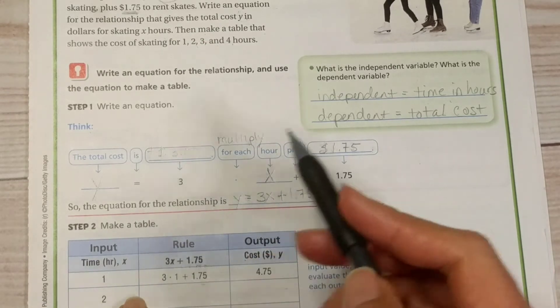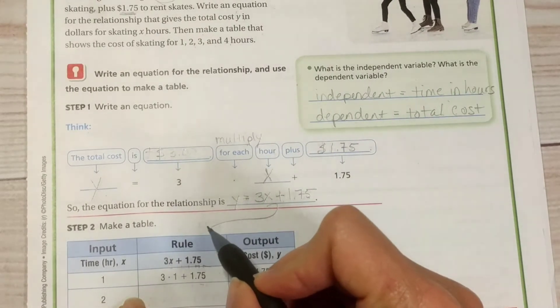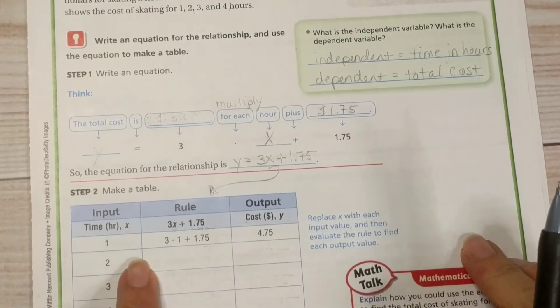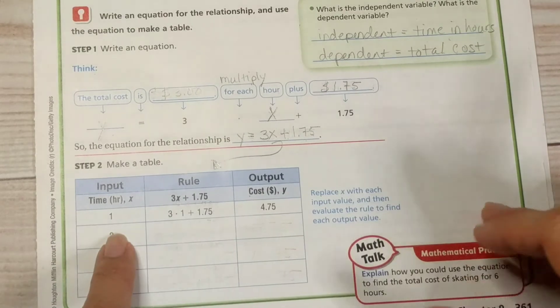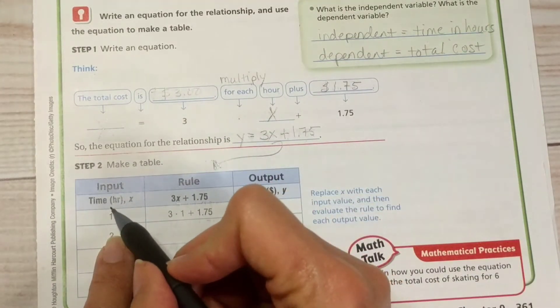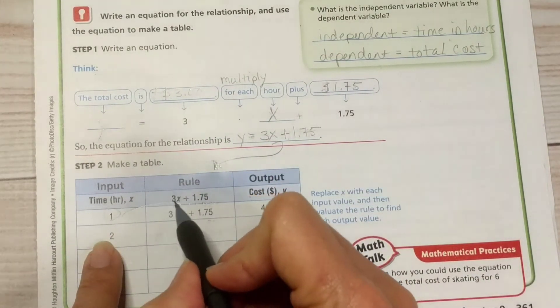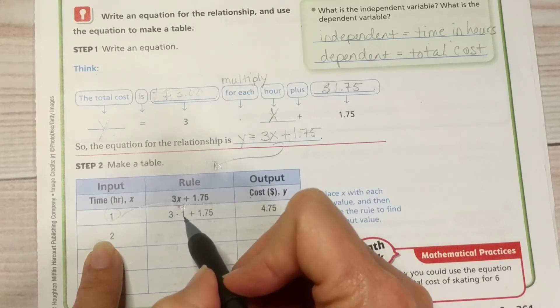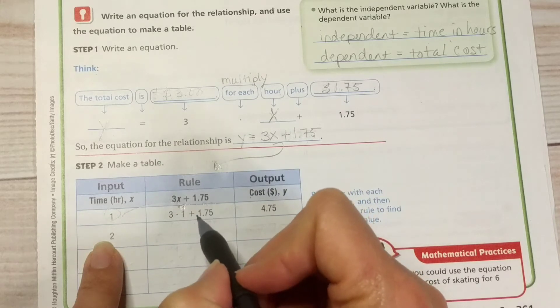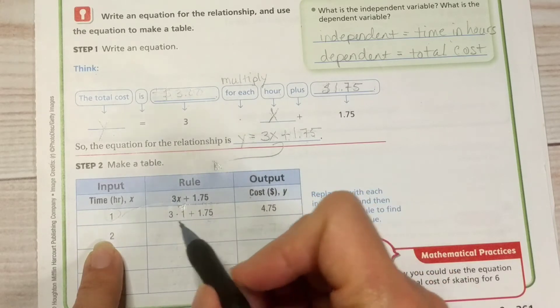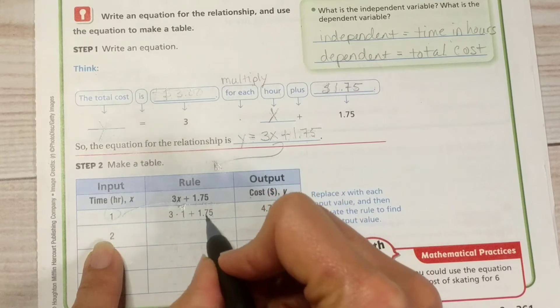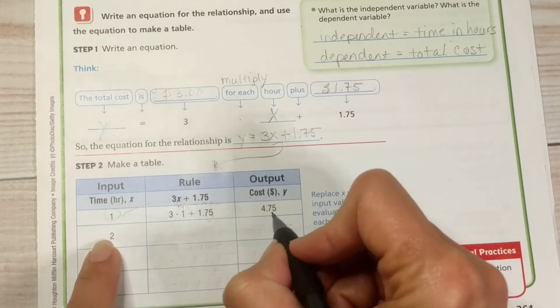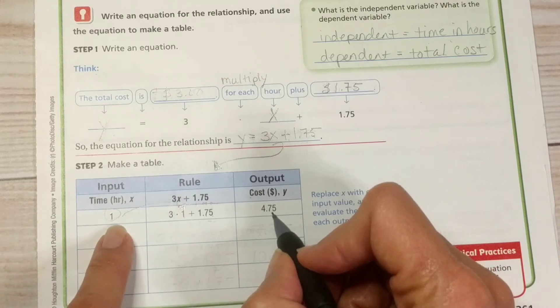So now we're going to make a table. We took this equation, put it down here. We call that a rule in the table. Our input value is 1. We take that 1, put it in for x right there. For the 3x, 3 times 1 plus $1.75. 3 times 1 is 3 plus $1.75 is $4.75. That would be our total cost if we skated for 1 hour.